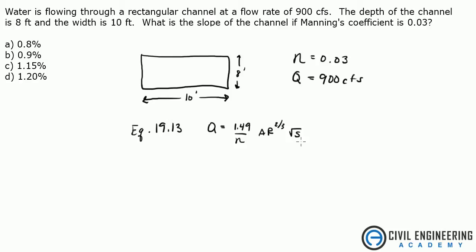And we are asked to find the slope. So we need to manipulate this equation to get S. And when you do that, you're going to get this: S equals Q times N divided by 1.49 times AR to the 2/3rds, and all of that squared.